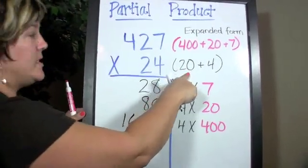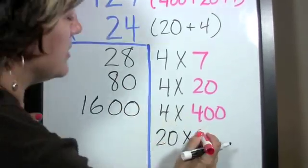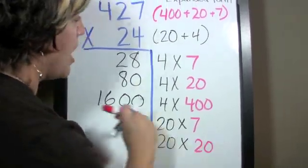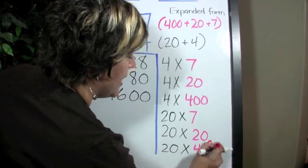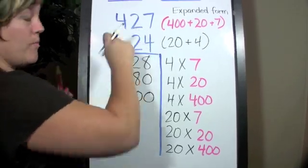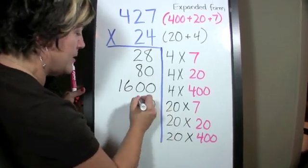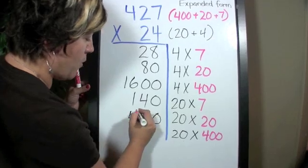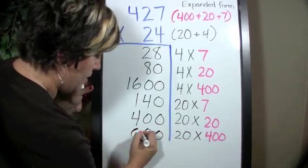Now we're ready for the 20. The 2, which is in the tens place, is a 20. So I say 20 times 7, 20 times 20, and 20 times 400 — the same way we'd say 2 times 7, 2 times 2, and 2 times 4. Let's write those out: 2 times 7 is 14, put a 0 at the end, you get 140. 2 times 2 is 4 with 2 zeros, you get 400. 2 times 4 is 8 with 3 zeros, you get 8,000.